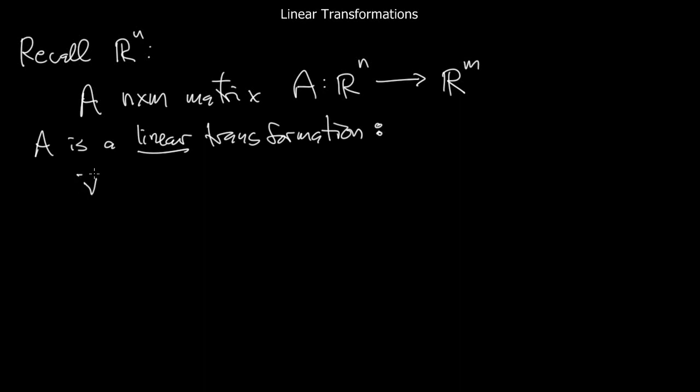It means that if you take a vector V in R^n and another vector W in R^n, and then you multiply and left by A, applied to V plus W is AV plus AW. We've used this over and over again.